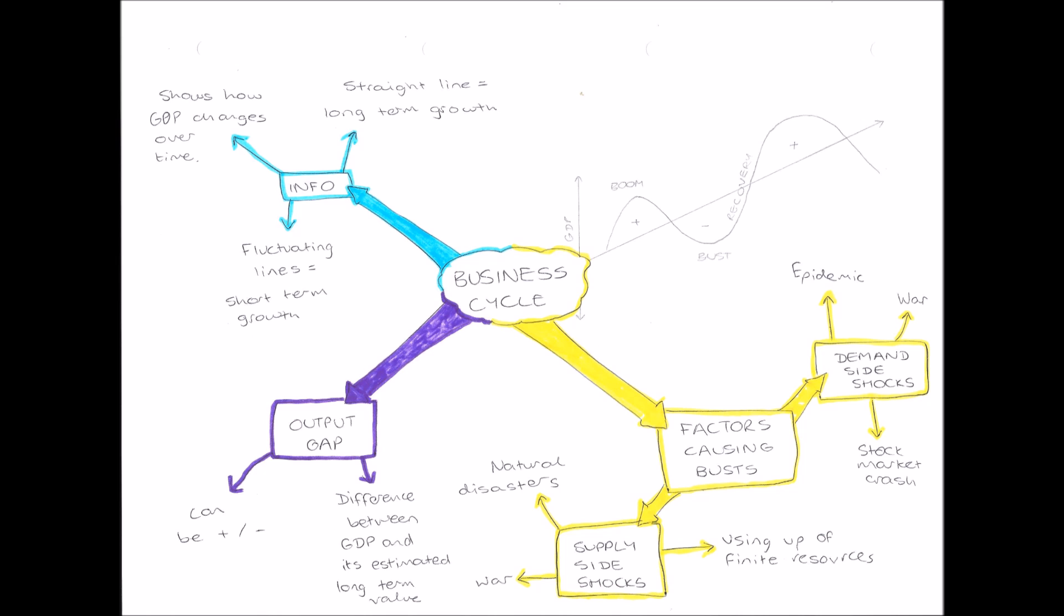So our output gap is the difference between GDP and its estimated long term value. And it can either be positive when there's a boom, or negative when there's a bust.